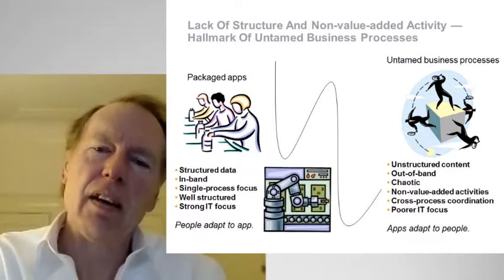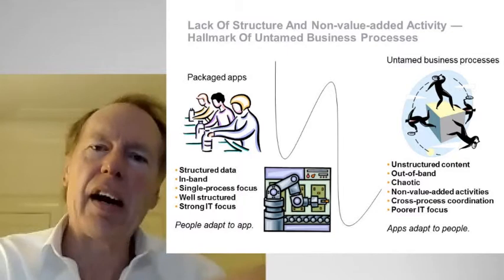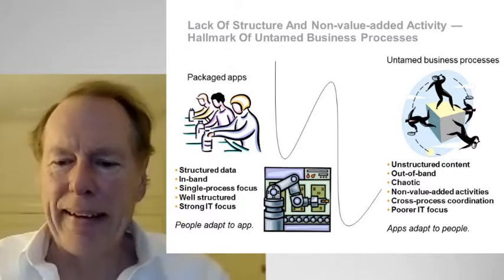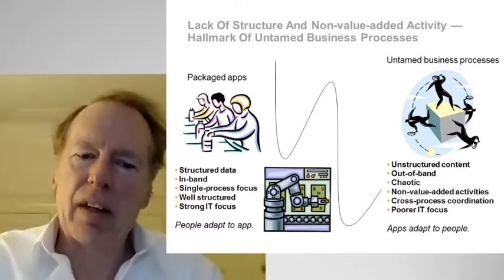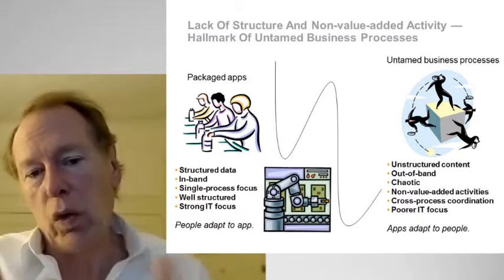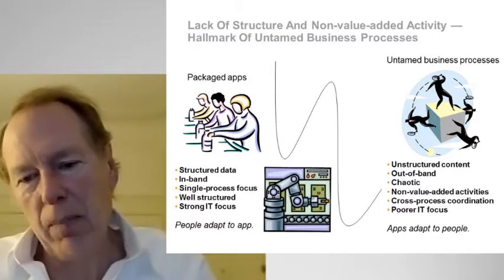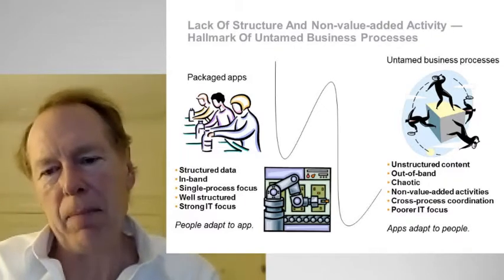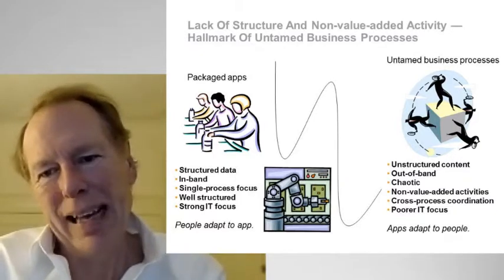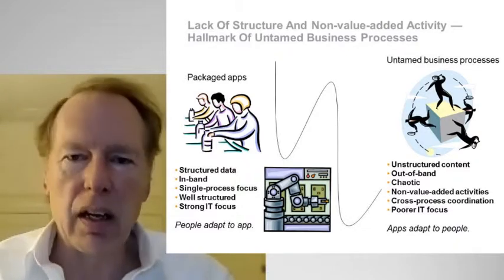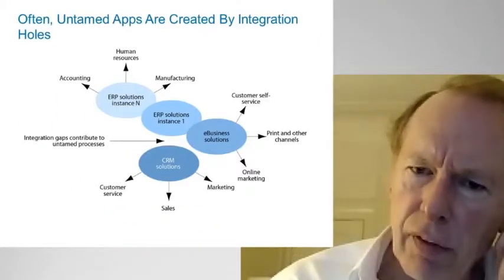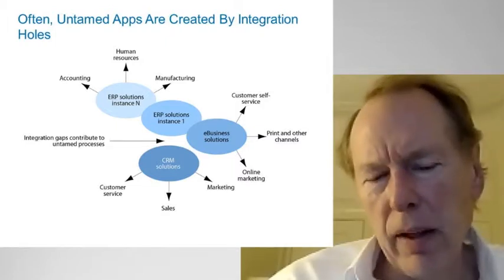This is why processes become untamed. In packaged apps, the tendency is you're buying best practice embedded in that app — you adapt people to the process. On the untamed side, you modify applications with more agile technologies to adapt to the people, creating more tendency to customize. If you build this out, you end up with a lot of gaps between the packaged apps — one of the reasons for the untamedness of the end-to-end process. Many companies have more than one ERP solution — five or six, or on three different versions — so the invoice processing solution has to feed metadata that can be absorbed by multiple ERP solutions.